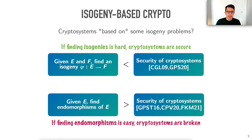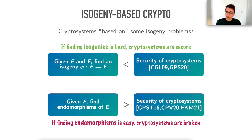There is a very similar problem involving endomorphisms. You're given one elliptic curve e and asked to find endomorphisms of e — isogenies from e to itself. That's the endomorphism problem. If you can solve this endomorphism problem, then cryptosystems are broken. So if isogeny finding is hard, cryptosystems are secure; and if the endomorphism problem is easy, then cryptosystems are broken.